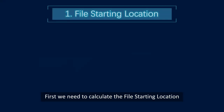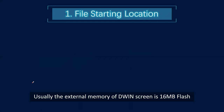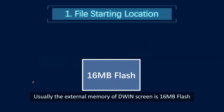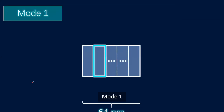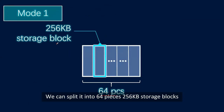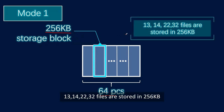First we need to calculate the file starting location. Usually the external memory of the DWIN screen is 16 megabytes Flash. In Mode 1, we can split it into 64 pieces of 256 kilobytes storage blocks. The 13, 14, 22, and 32 files are stored in 256 kilobytes.